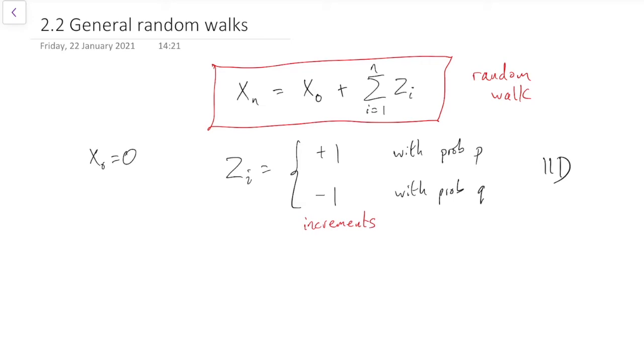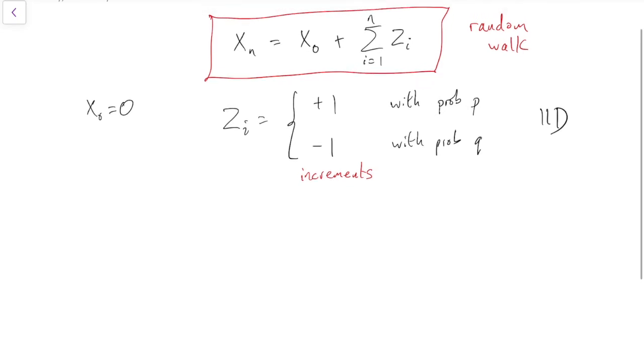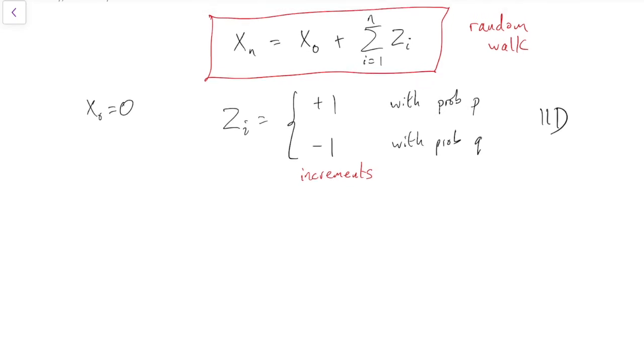But the nice thing about writing it in this form is that we can very quickly work out the expectation and the variance of our random walk. Let's do that. So the expectation of Xn. Well, we can just substitute in the red boxed equation. Right? That's the expected value of X0 plus sum i equals 1 to n of Zi.